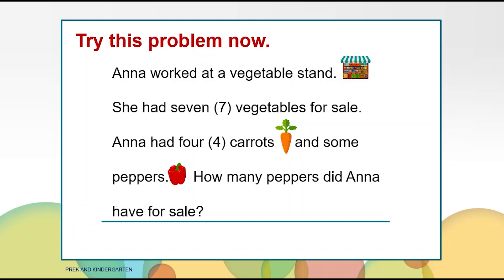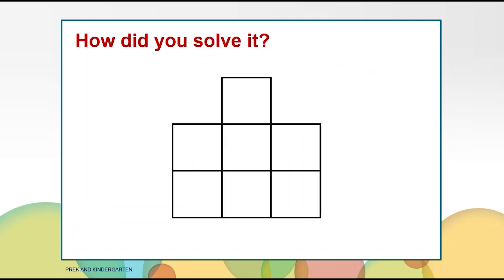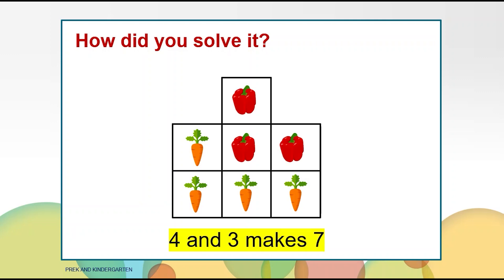Everyone had some great answers. Let's take a look at some of the ways you solved the problem. Maybe you made a seven-box mat because there were seven vegetables total. Then you added four carrots or counters to show the four carrots. You counted how many empty boxes there were — one, two, three — which means there were three peppers for sale. Four parts and three parts make seven, which is the whole.